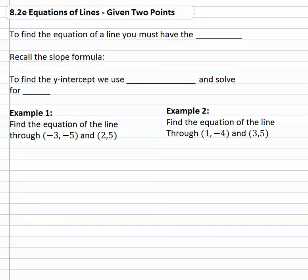In this video we're going to look at how we can find the equation of the line if we are only given two points. The thing you notice is missing is that to find the equation of the line we must have the slope, which means we have to recall the slope formula: m, the slope, is equal to y₂ minus y₁ over x₂ minus x₁. That's one of those very important formulas you should have memorized by now.